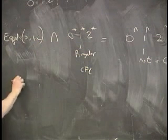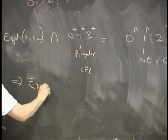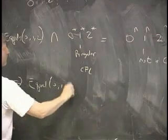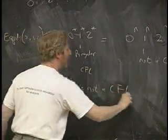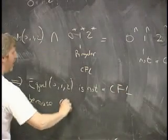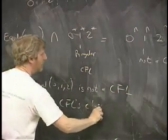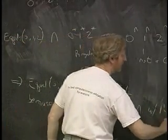So this identity implies that equal zeros, ones, and twos is not a CFL because CFLs are closed under intersection with regular sets.